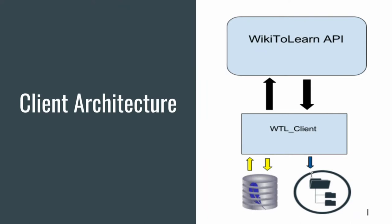So the client architecture — how does my client work? The WikiToLearn client acts as middleware. It makes GET and POST requests to the WikiToLearn API, fetches the data, gets JSON back, and then parses the JSON to get HTML which it displays in a web view. If a user decides to save a page, it will again make a query to the API, save all the images to the file system, and make an entry into the database. That is the architecture of the client.